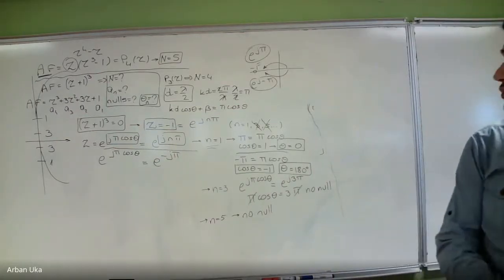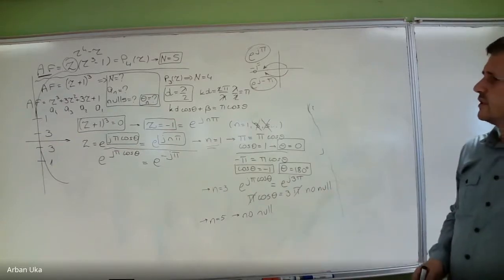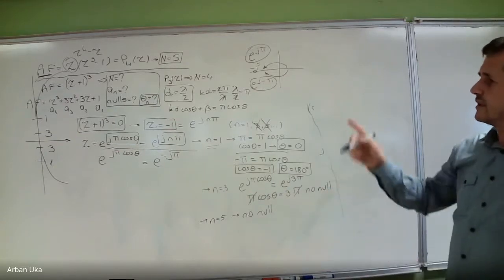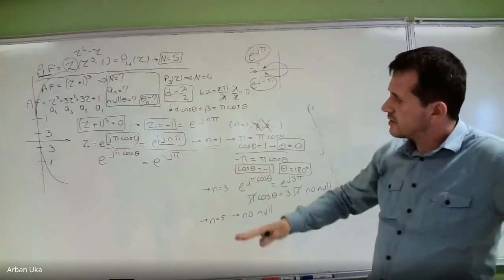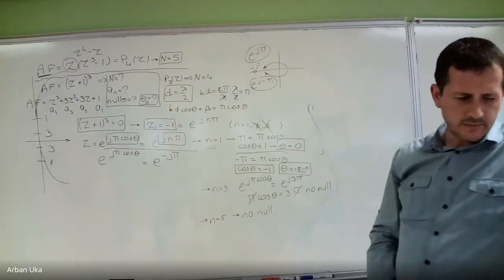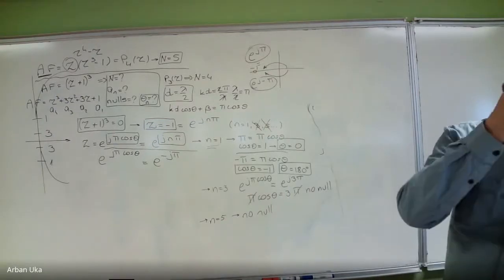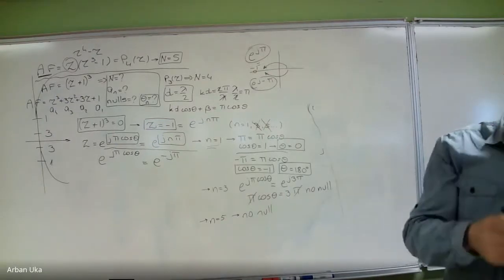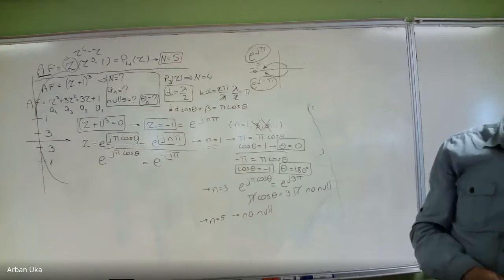So at least we've got two nulls. We have an antenna which, by symmetry, gives nulls right at the top and right at the very bottom. Now another important element we may be interested in is the half-power beamwidth in degrees.